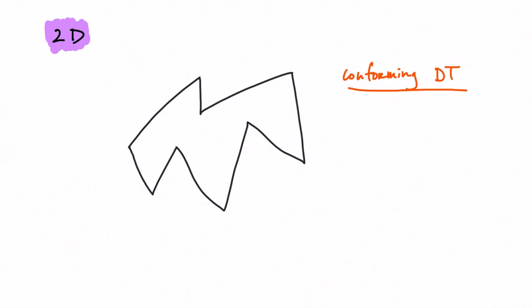The generalization to 3D of constraint and conforming Delaunay triangulation is a very complex topic because basically the 2D concepts do not generalize directly.